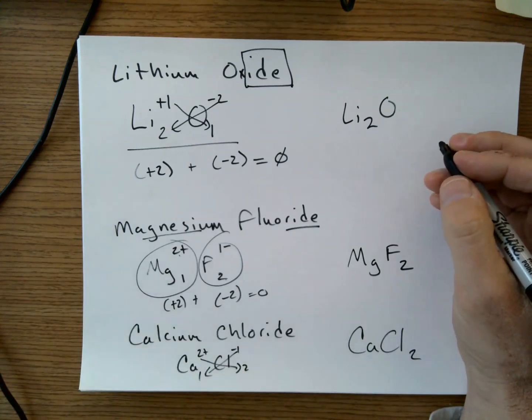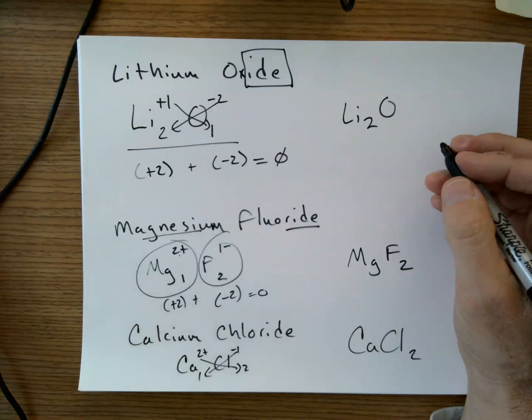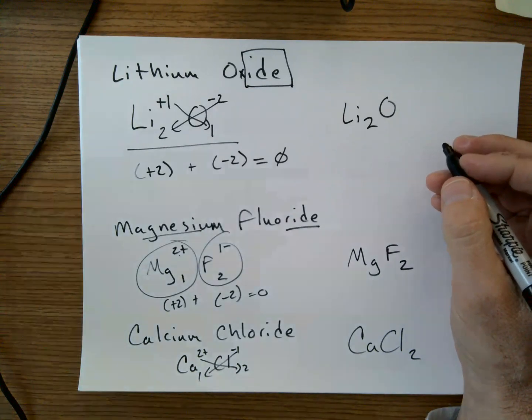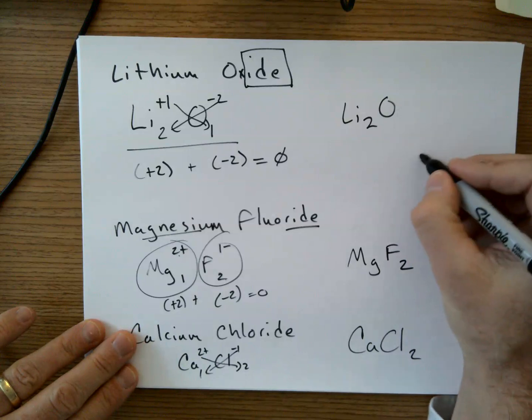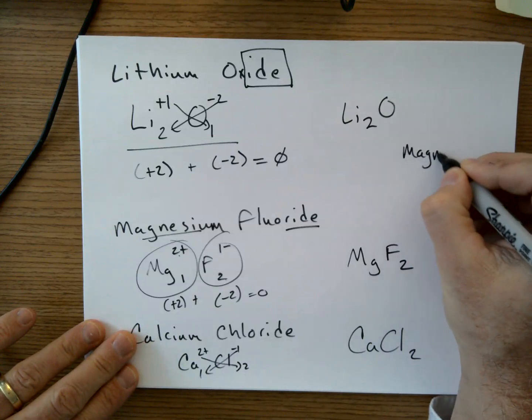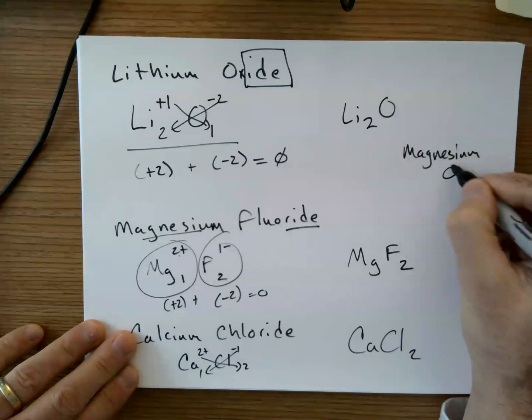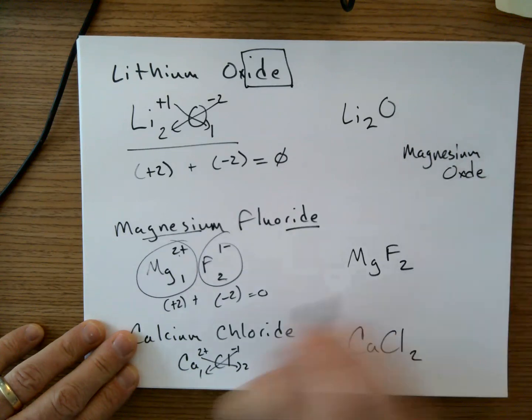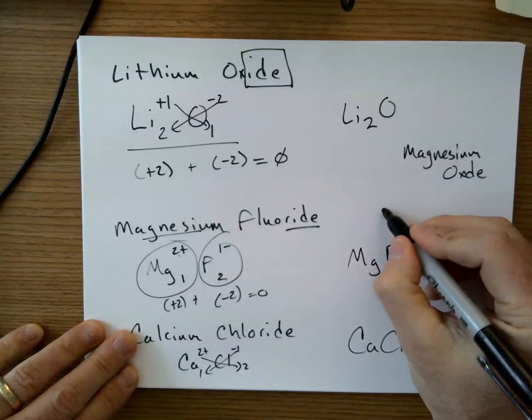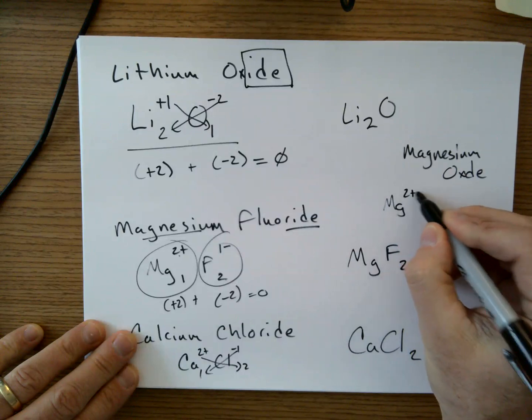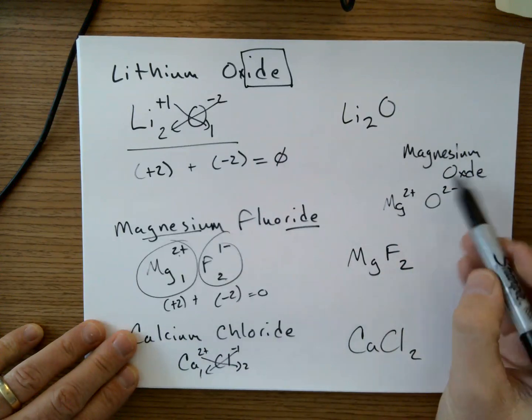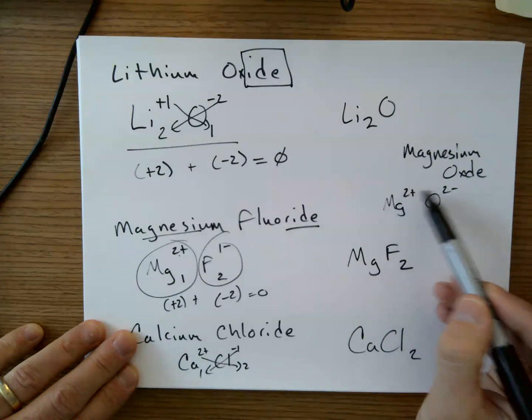Let's try one more. Magnesium oxide. Magnesium. Positive two charge. Oxygen minus two charge. Now, a trick here is when these are the same values, the oxidation states are the same values, but opposite charges.